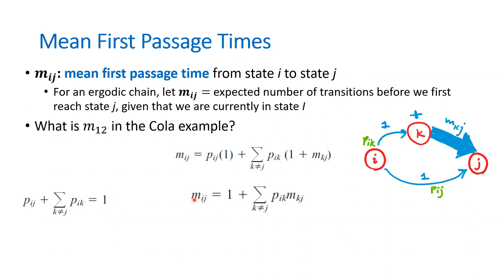Whenever you want to find the expected number of steps going from i to j, you write: m_ij = 1 + sum over k (p_ik * m_kj), where k is not equal to j. Notice the pattern: p starts with i, m ends in j, so you have i–k in between. p_ik means first I go to k with that probability, and then m_kj gives the steps from k to j.